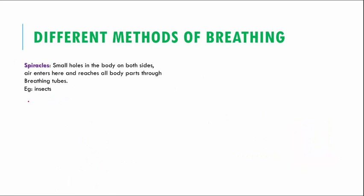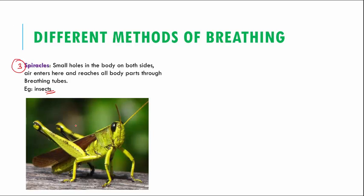The third method of breathing is with the help of spiracles. Now what are spiracles? Spiracles are exclusively seen only in insects. Now these spiracles are small holes which are found on both sides of the body. So there will be small tiny holes which allow the air to enter and it reaches all the body parts through breathing tubes. So insects, please remember, they breathe with the help of spiracles.